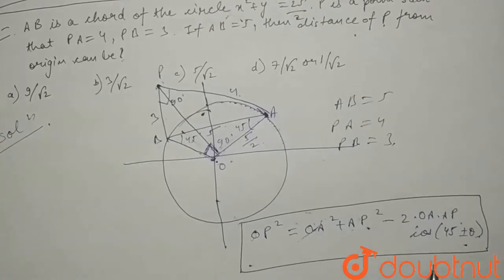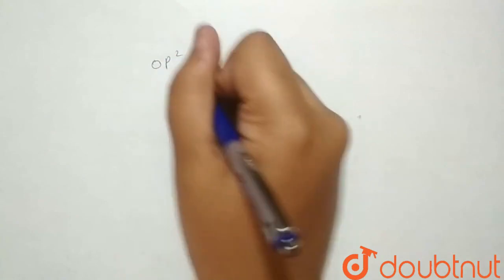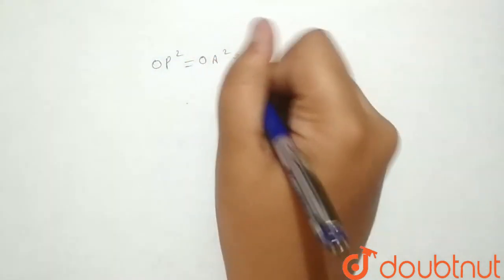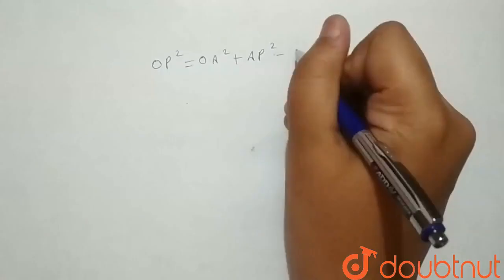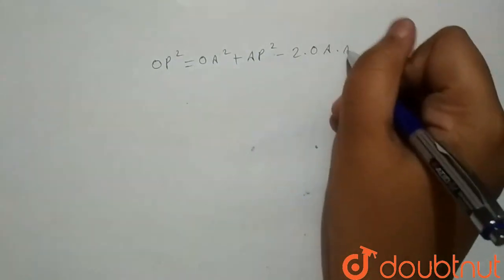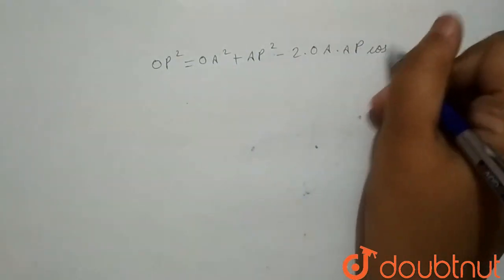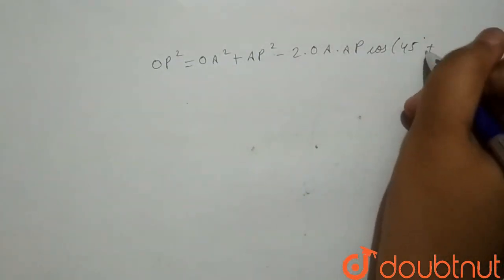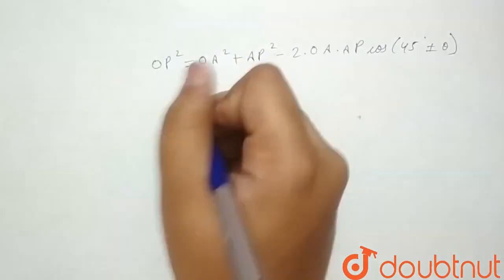And when we will put the values given in the question in this formula, what you will get is: OP squared equals OA squared plus AP squared minus 2 times OA times AP times cos 45 degrees plus or minus theta.